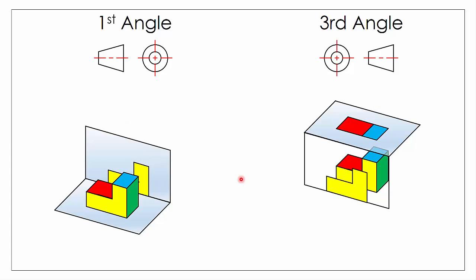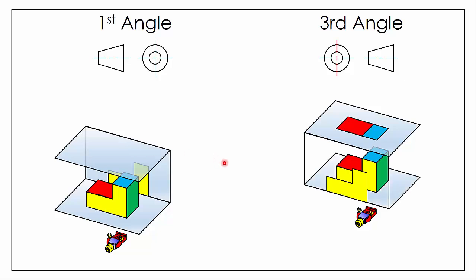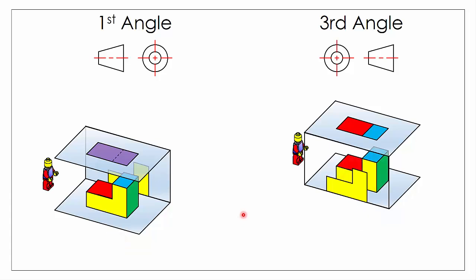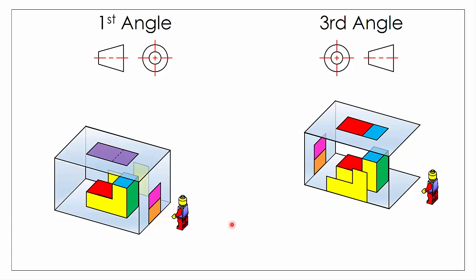The same thing applies looking from below — the plane of reference is above the object in first angle, whereas it's below the object in third angle, again casting like a shadow versus tracing onto the sheet of glass. For our end views, looking from the left: the plane of reference appears on the right in first angle, whereas it appears on the left in third angle. Looking from the right: the plane of reference is on the left in first angle versus the right in third angle — casting like a shadow versus pulling towards ourselves and tracing onto the sheet of glass.